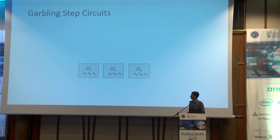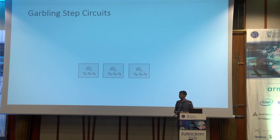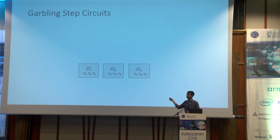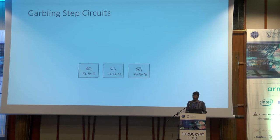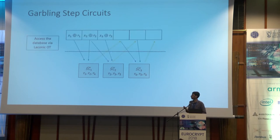The first step in garbling the step circuits is to garble each of them using a selectively secure garbling scheme — for example, Yao's garbling scheme. This raises the question: how do these garbled step circuits access the database? We need a mechanism for them to read from and write to the database. To enable this, we use a primitive called laconic oblivious transfer.